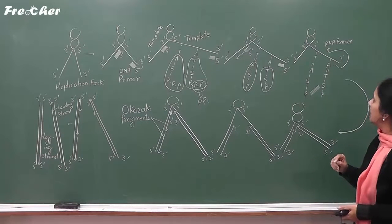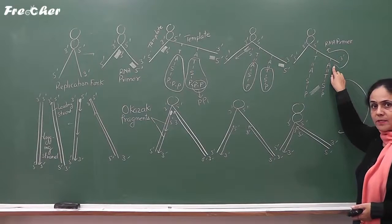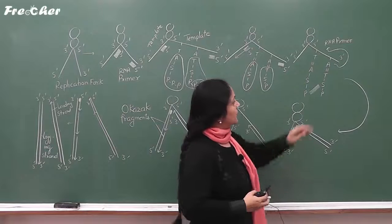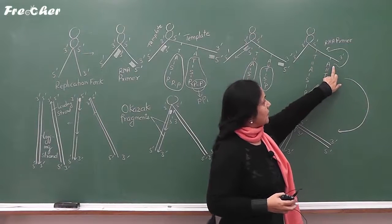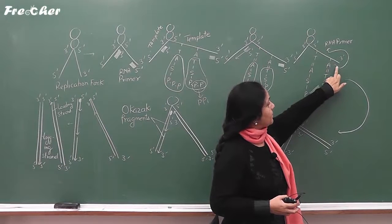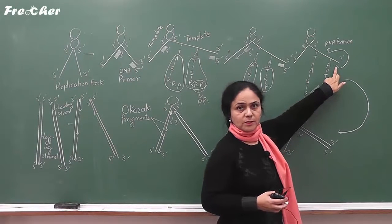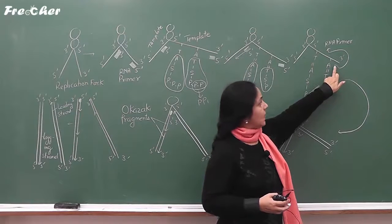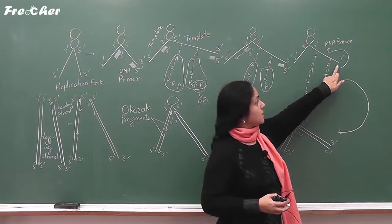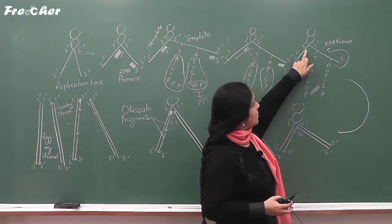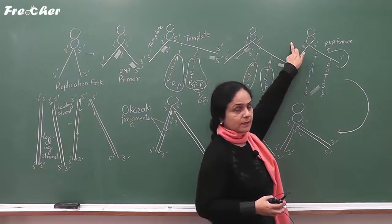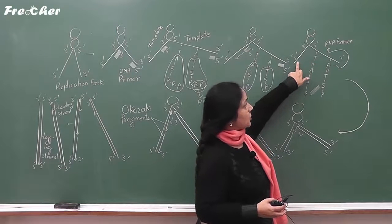There is no further requirement of RNA primer, so DNA polymerase 1 removes the RNA primer and fills the gap. When the RNA primer is removed, a gap appears, and DNA polymerase 1 adds DNA nucleotides in that position. Similarly, the RNA primer on the other template is also removed by DNA polymerase 1, and the same steps occur on that template as well.